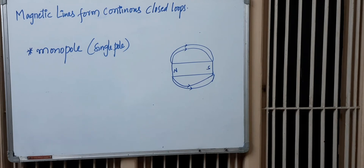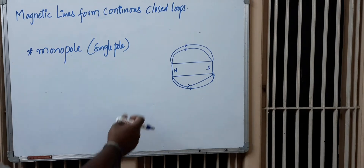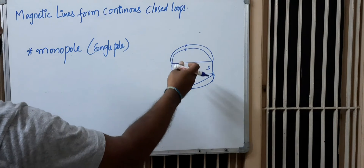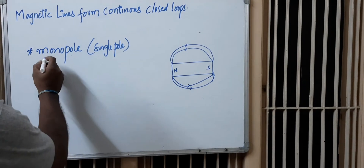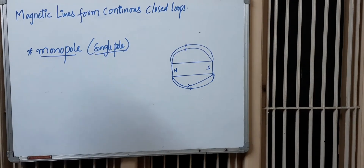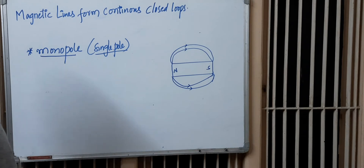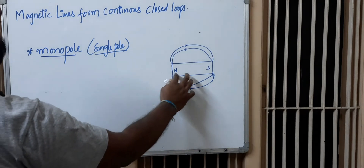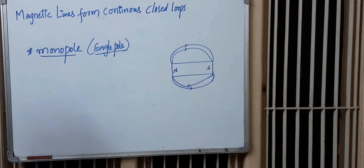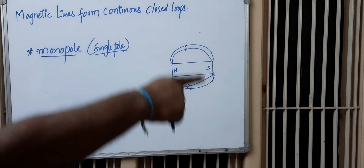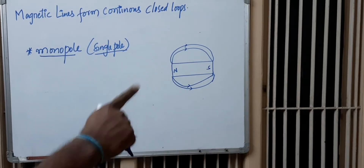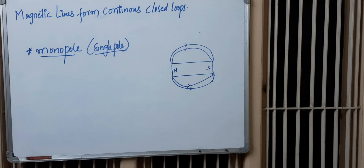Obviously, if you consider any magnet — whether a bar magnet or any other — a mono pole or single pole magnet does not exist. So the only possibility is a magnetic dipole, meaning it consists of two poles. The path of the magnetic force for every magnetic dipole starts from the north pole and goes to the south pole to form a loop.